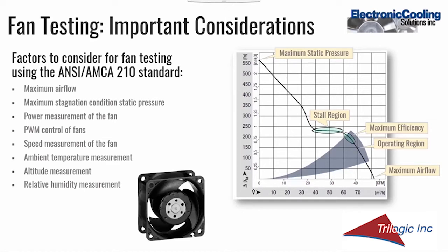The primary purpose of fan testing is to understand the performance of the fan in terms of the static pressure head it generates at various airflow conditions — basically deriving a curve as shown in the figure on the right. The two most important points for performance definition are the maximum static pressure generated at zero airflow condition and the maximum airflow at free delivery. The most useful information is the nature of the curve in the region of the operating point, including the sweet spot for maximum efficiency and the stall region that should be avoided.